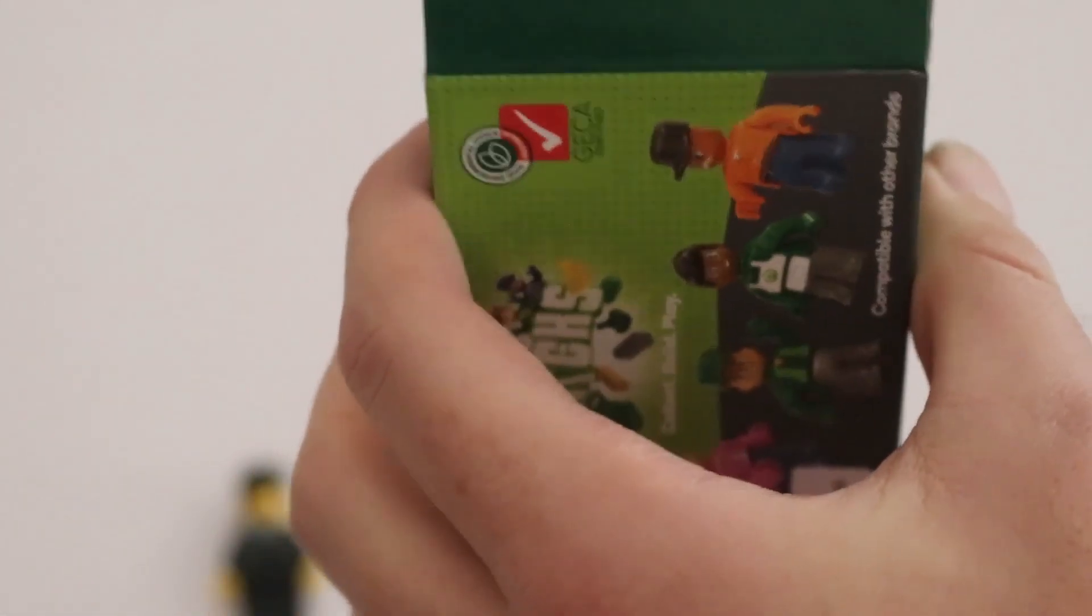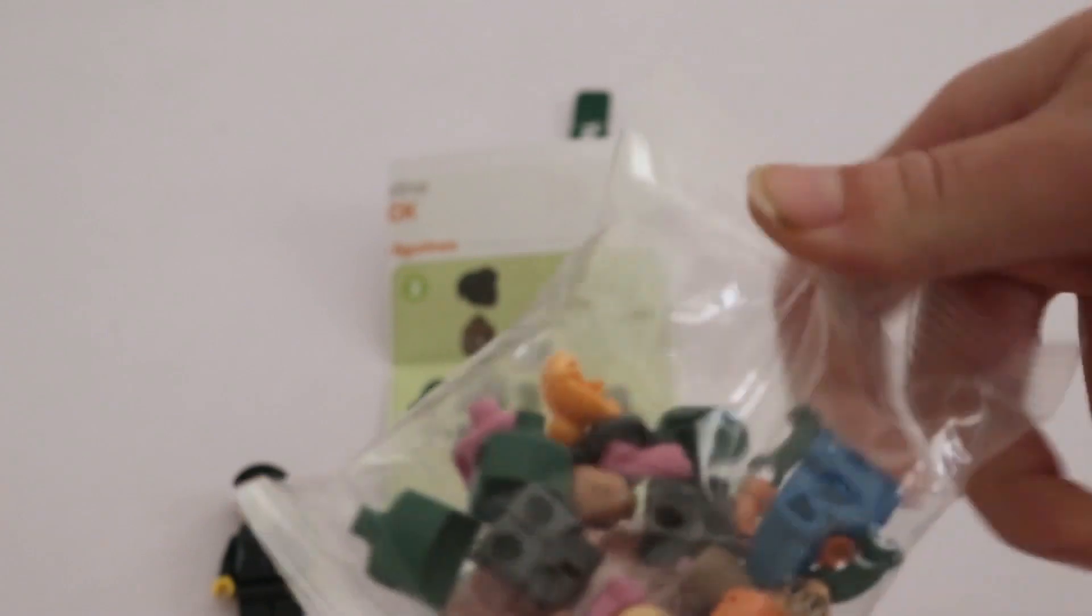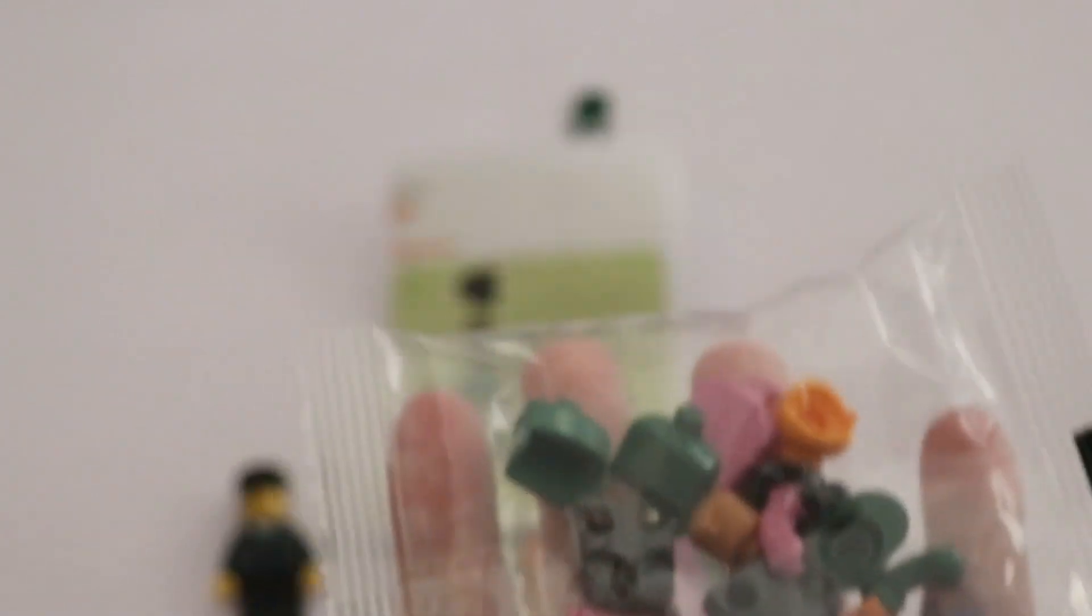Okay, what do we have? We've got a few stickers here which you put on. We have instructions on how to put the figures together. So you get multiple ones, they're all in this bag. Interesting, I thought it was going to be all together but it looks like we have to build them.